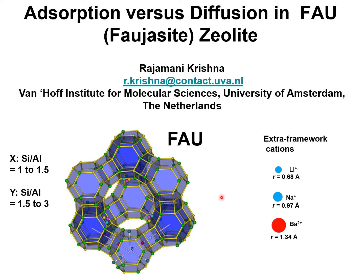A variety of extra-framework cations are used — for example, lithium, sodium, or barium. Barium X zeolites are used for xylene separations, lithium X zeolites are used for nitrogen-oxygen separations, and for flue gas applications in which CO2 requires to be captured. The extra-framework cations are commonly sodium cations.